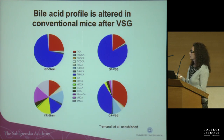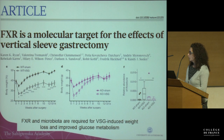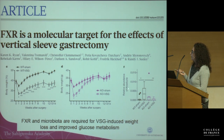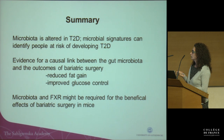We also observed a shutdown of hepatic gluconeogenesis in these mice. We believe FXR and FGF15 are important for the effects of VSG, and we have recently published, together with Randy Sealy, that FXR is important for the outcome of sleeve gastrectomy and is related to shifts in the microbiota. In summary, microbiota is altered in type 2 diabetes, molecular signatures can identify people at risk, there is evidence for a causal link between gut microbiota and bariatric surgery outcomes, and microbiota and FXR together may be required for the beneficial effects of bariatric surgery.